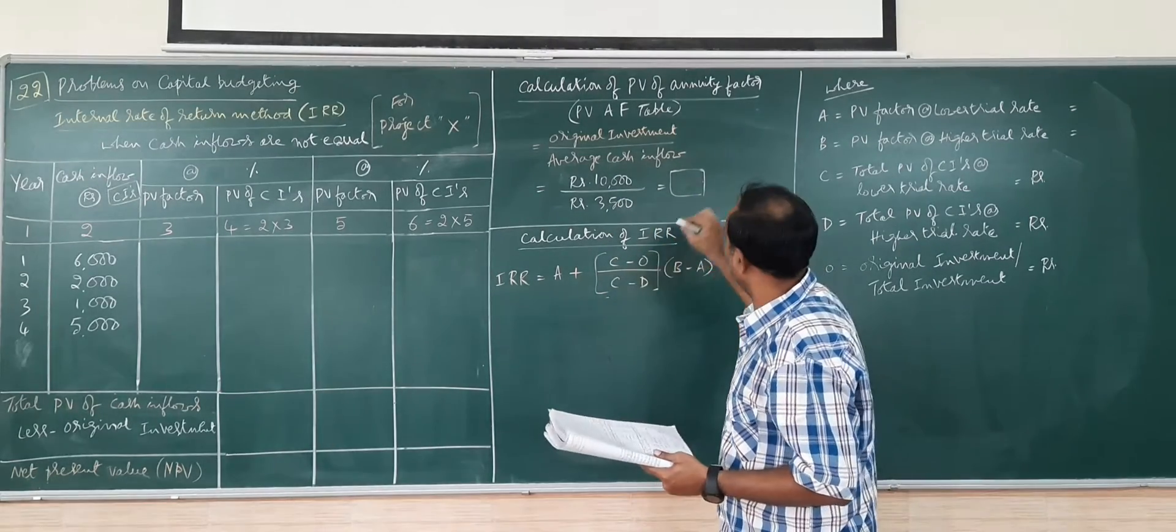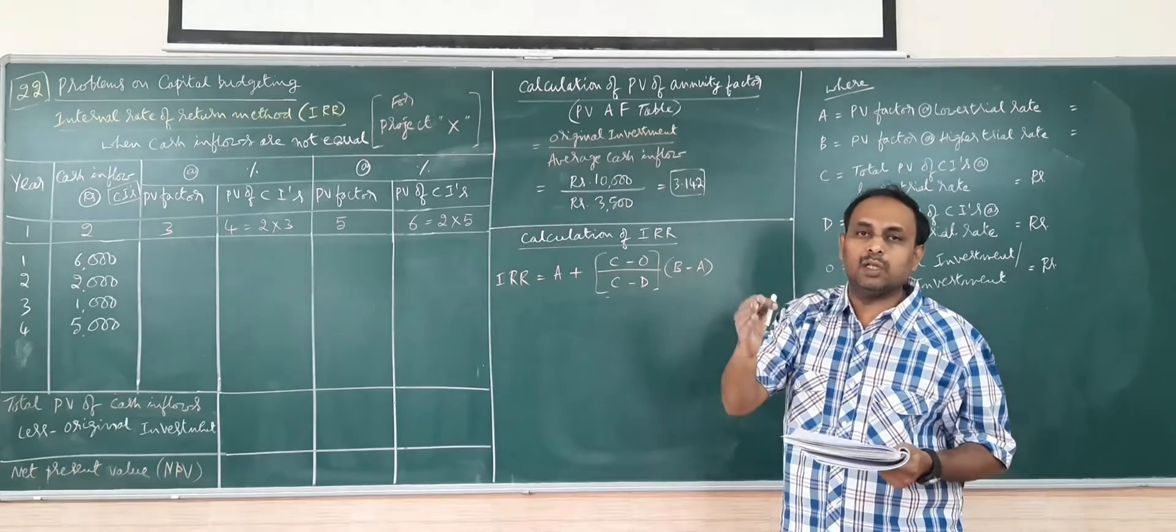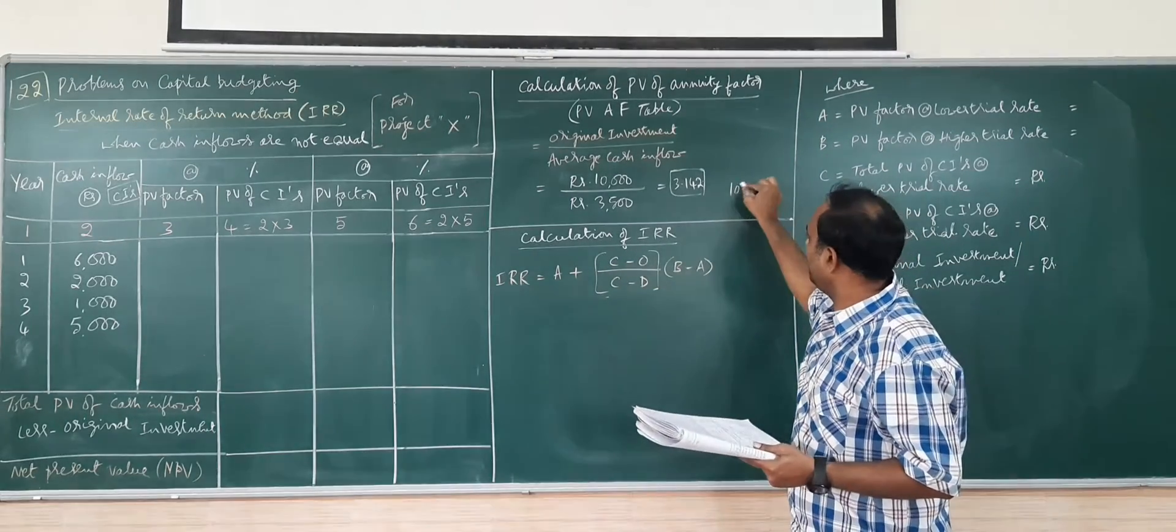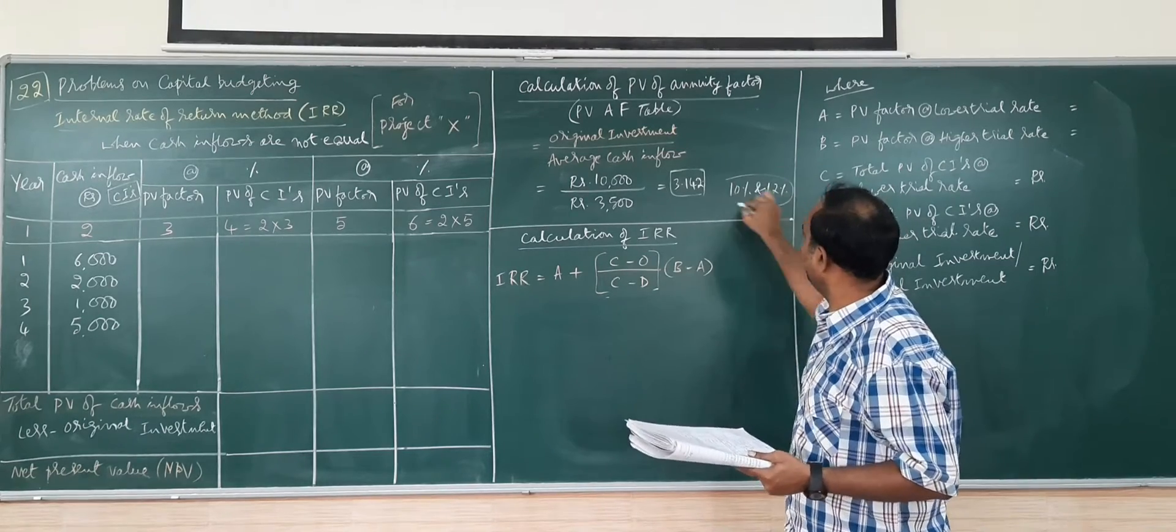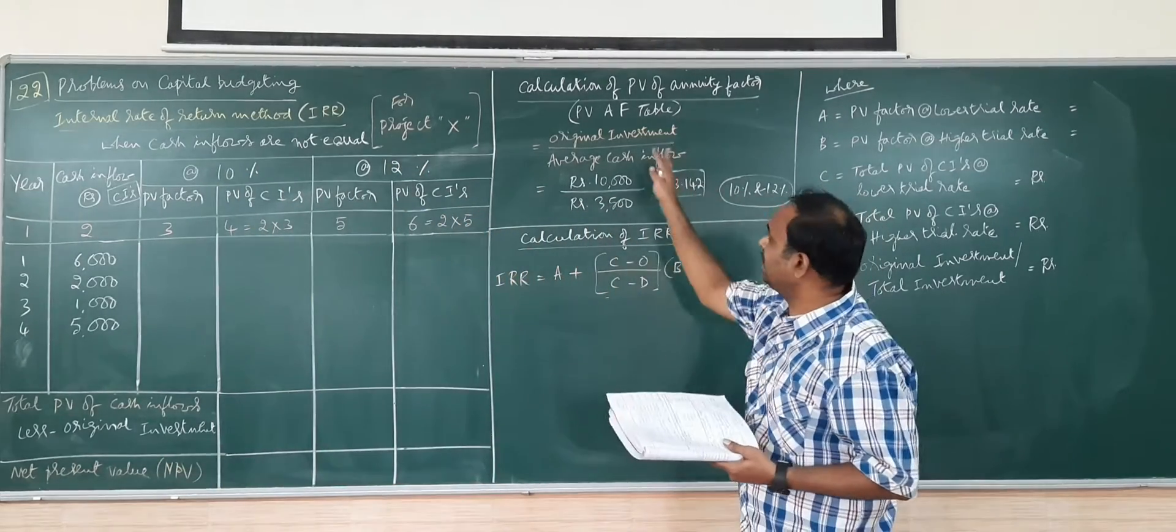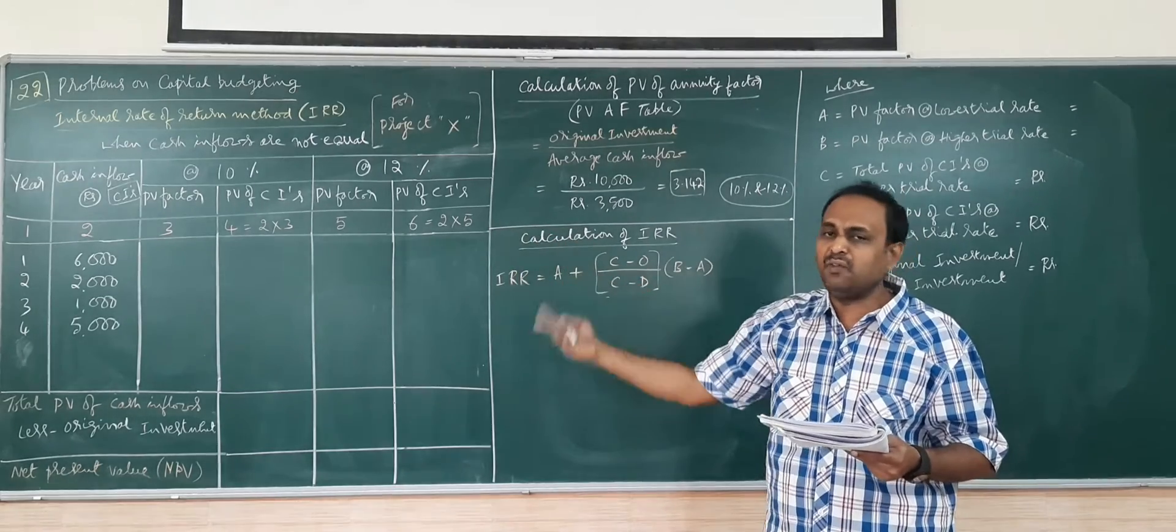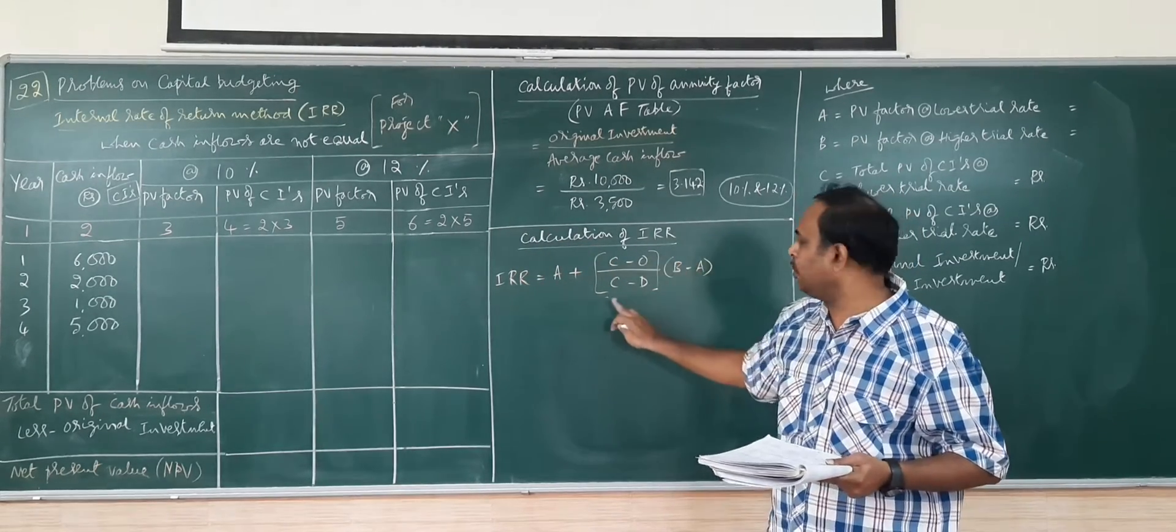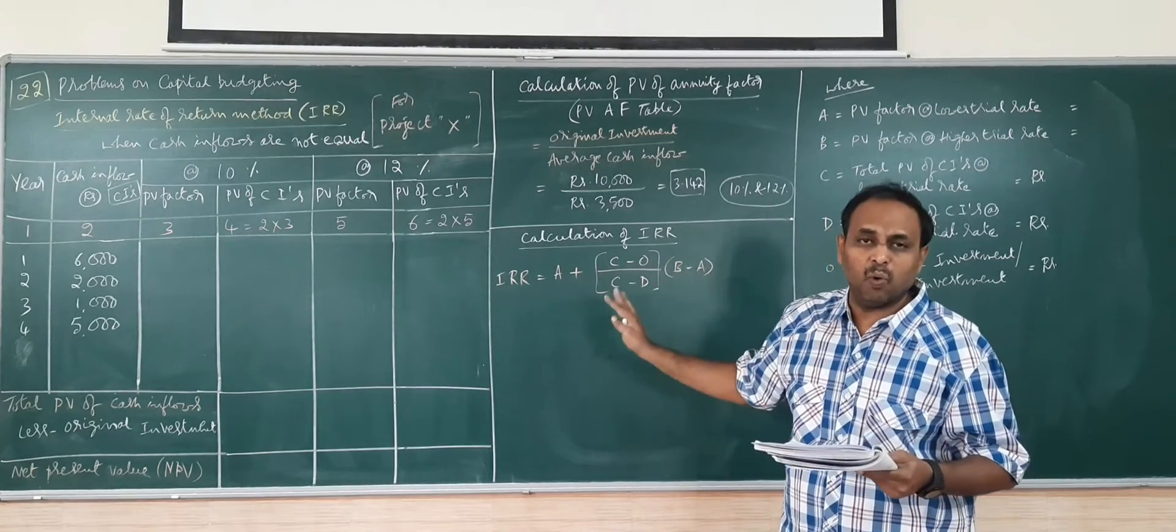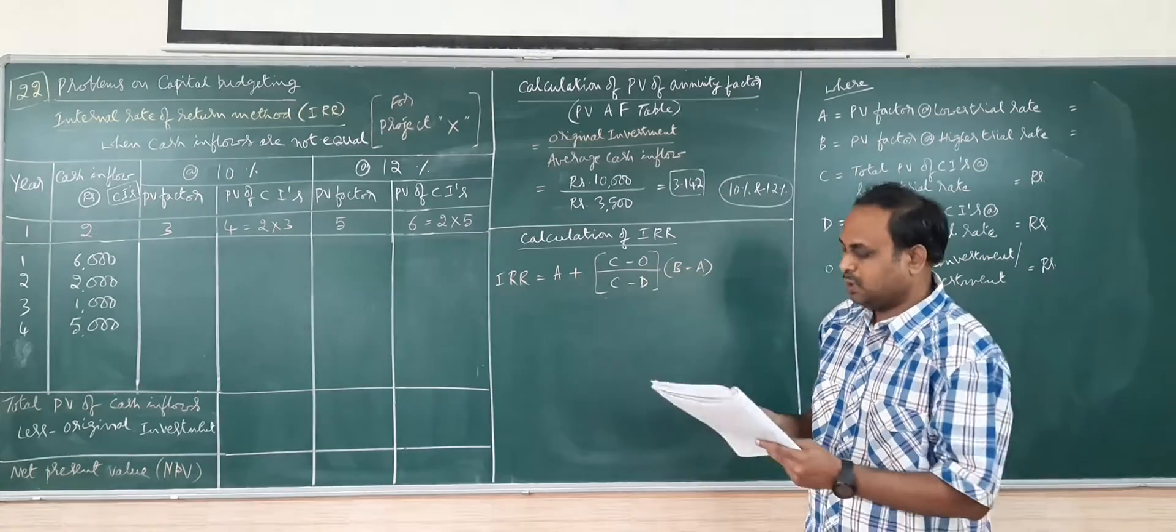At 3,500 you get 3.142 the annuity factor. You can go through the annuity factor for 4 years, which is the nearest 3.142. I have found that 10 and 12 percent is closest. Without calculating also we can have two or three trial rates of PV factor, then we can work the problem. When you are putting the formula you can take only A and B, only two trial rates.